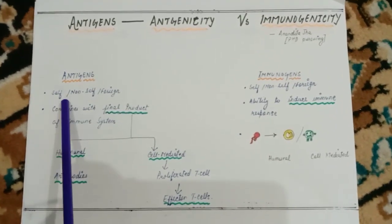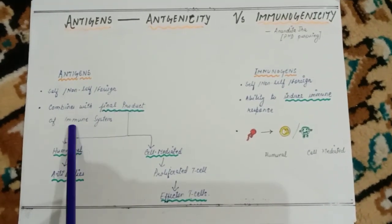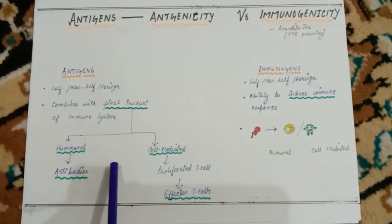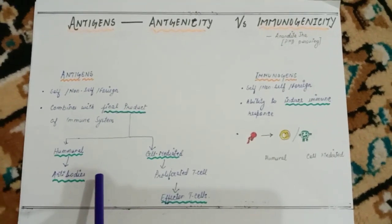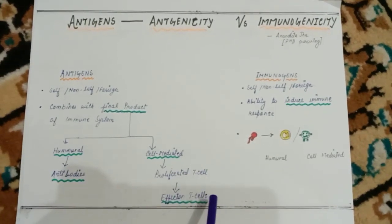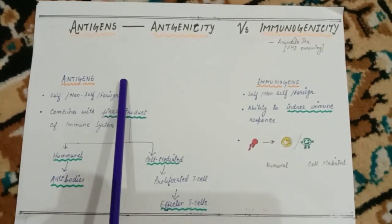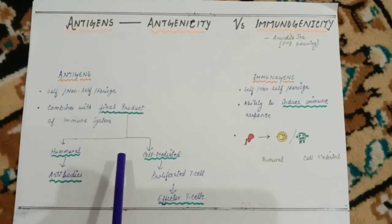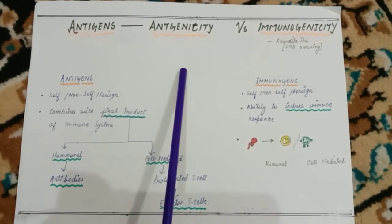Both antigens and immunogens can be self, non-self, or foreign. An antigen combines with the final product of the immune system. In humoral response, antibodies are made and foreign things are killed. In cell-mediated response, effector T cells proliferate. So the antigens interacting with the final products — antibodies or effector T cells — this property is known as antigenicity.